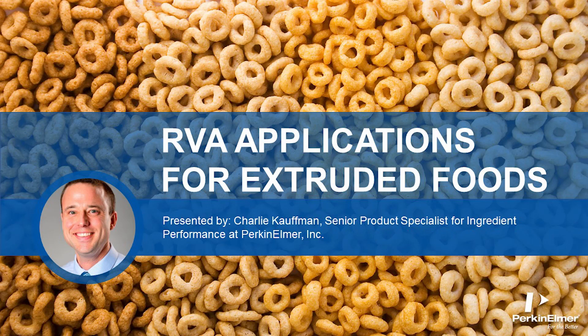We're back with the RVA webinar series. Today's episode is RVA applications for extruded foods. I'm Charlie Kaufman, Perkin Elmer's product specialist for ingredient performance products for the food division. This is an especially interesting one because the people who use it really, really use it, and it really pays off. If there were one set of applications that I could really evangelize for, it would be this one.